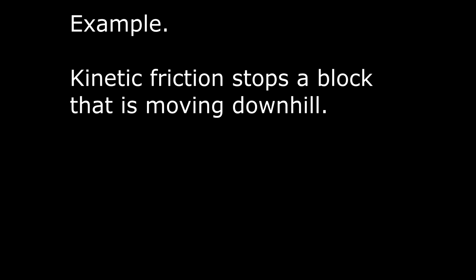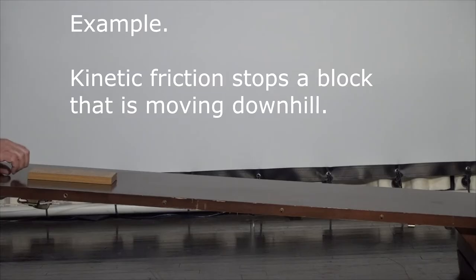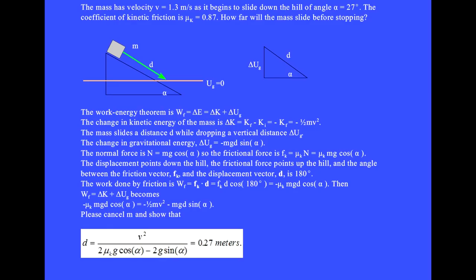Kinetic friction stops a block that is moving downhill. The mass has velocity v equals 1.3 meters per second as it begins to slide down the hill of angle alpha equals 27 degrees. The coefficient of kinetic friction is mu k equals 0.87. How far will the mass slide before stopping?